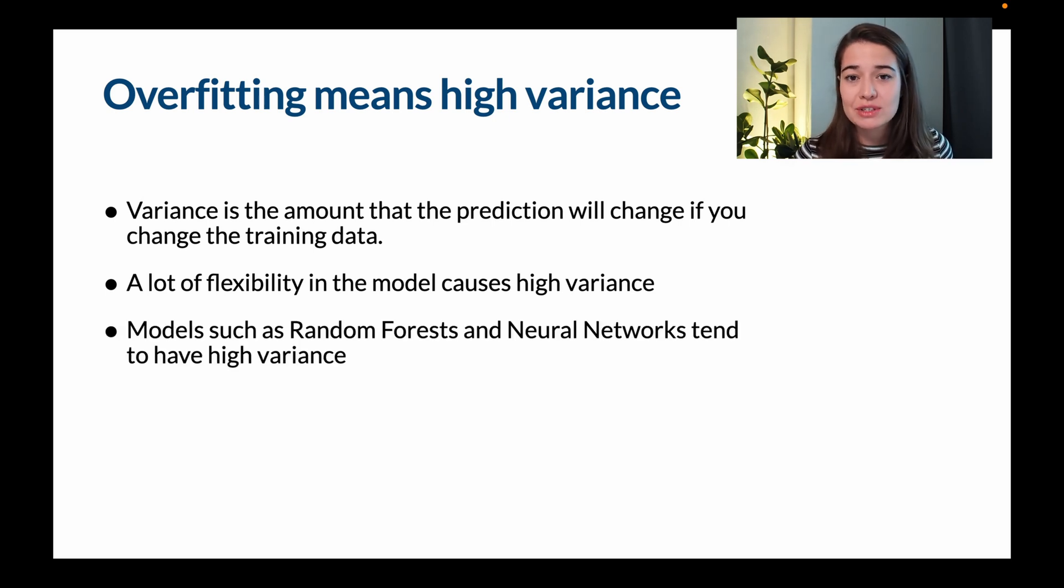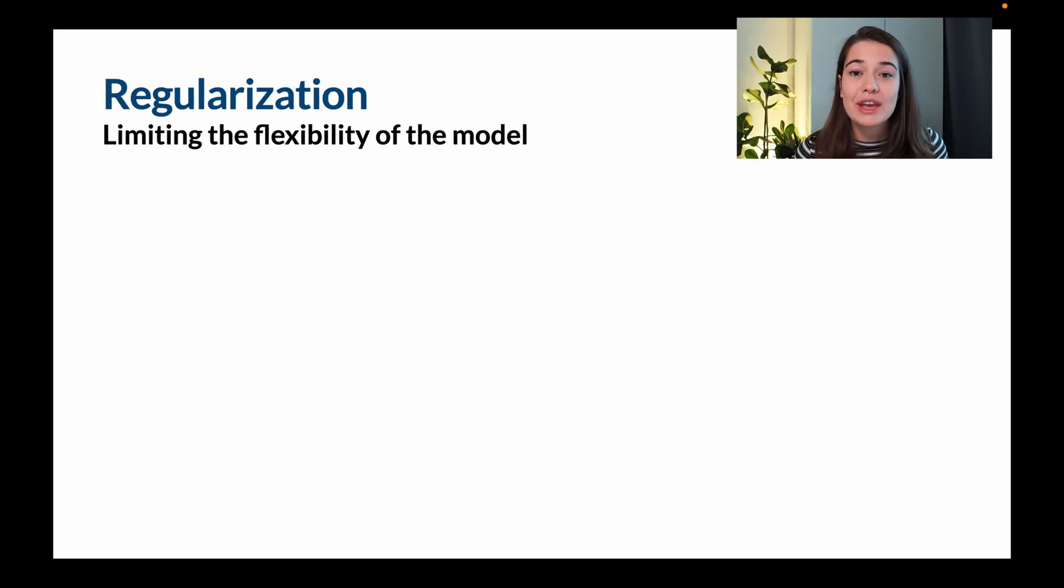Some examples of models that have high variance or high flexibility and thus high variance are random forests or neural networks, for example. And that's exactly where regularization comes in. Regularization is a way to limit this flexibility that the model has in hopes to avoid overfitting.